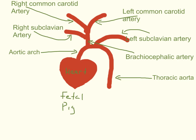The main key difference to notice is in the arteries around the heart. From the previous slide, we looked at our inferior and superior vena cava and the branches coming off the superior vena cava — those are the same on the fetal pig as on the human. However, when we look at the arteries surrounding the heart, we see a key difference. On the human heart, the aortic arch had three branches. On the fetal pig, the aortic arch has two branches: the left subclavian artery going to the left arm, and the brachiocephalic artery.